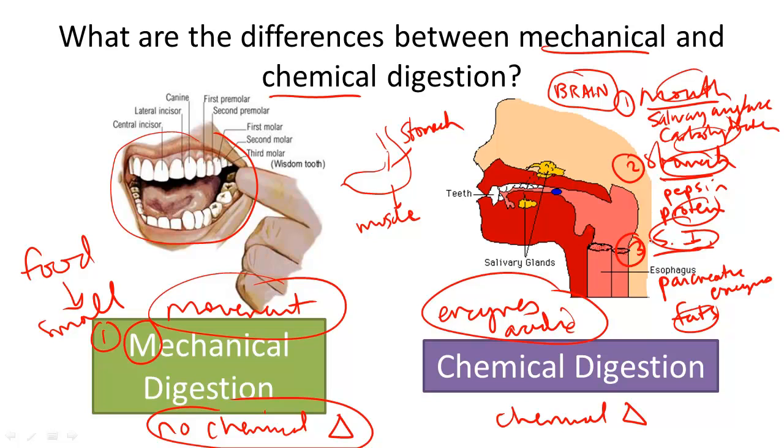As a unit, mechanical and chemical digestion work together to help us get the vital nutrients we need to survive.